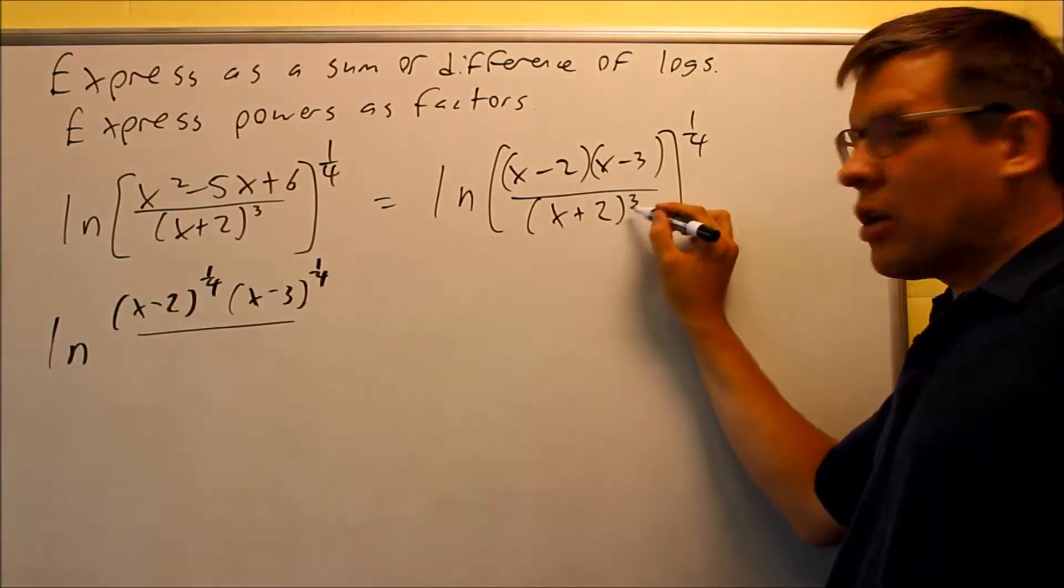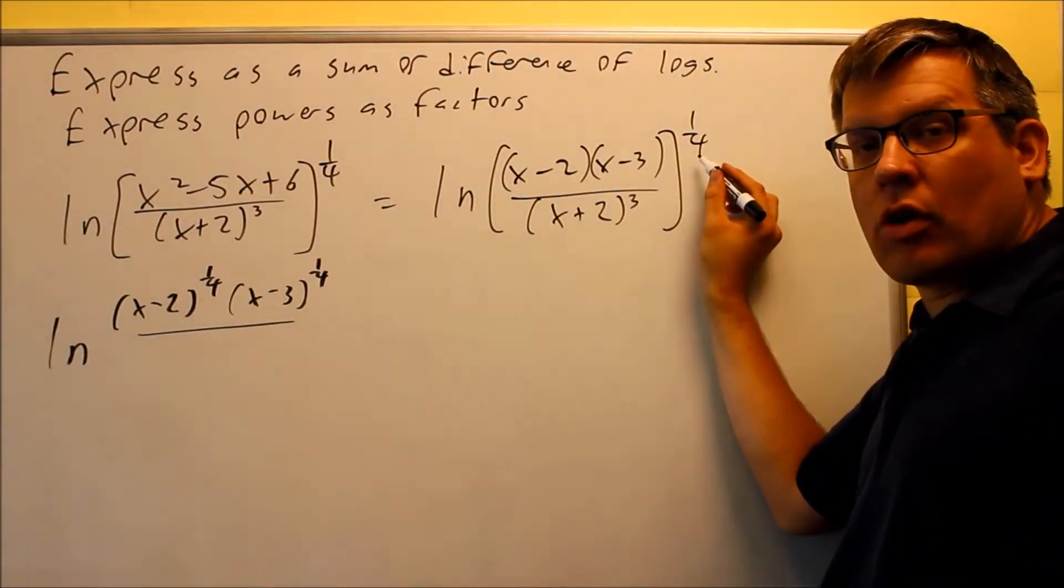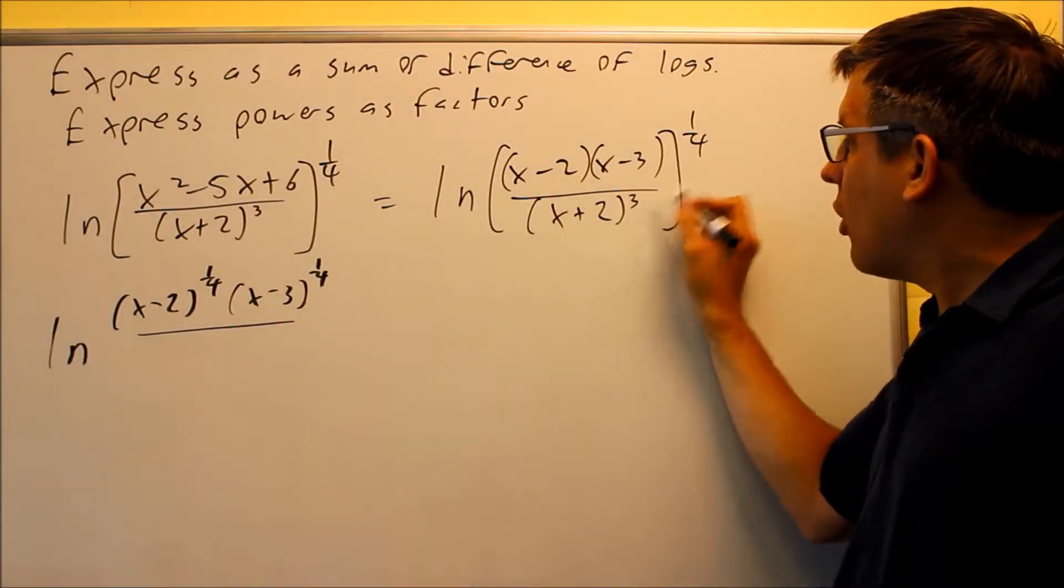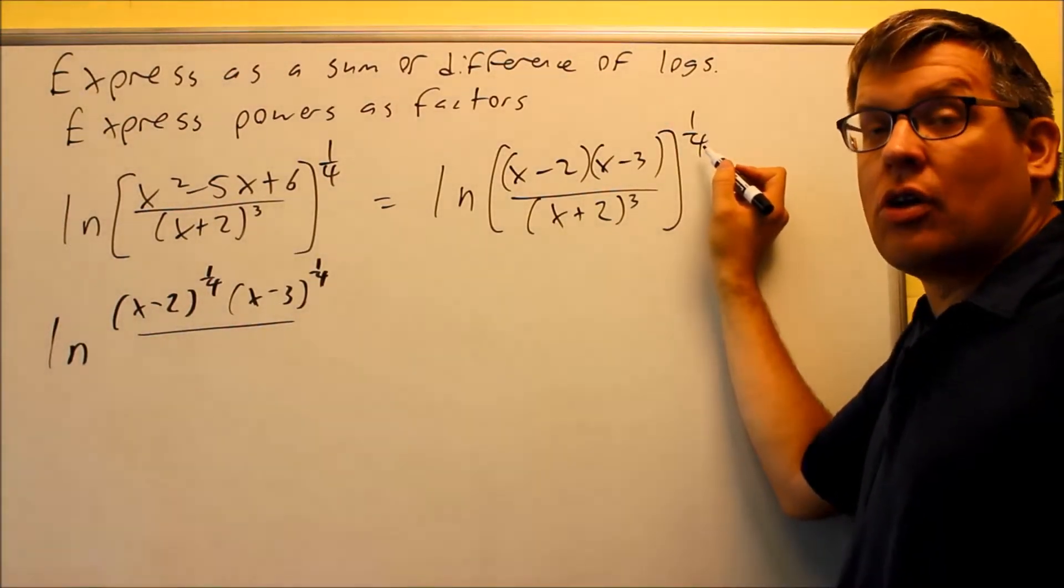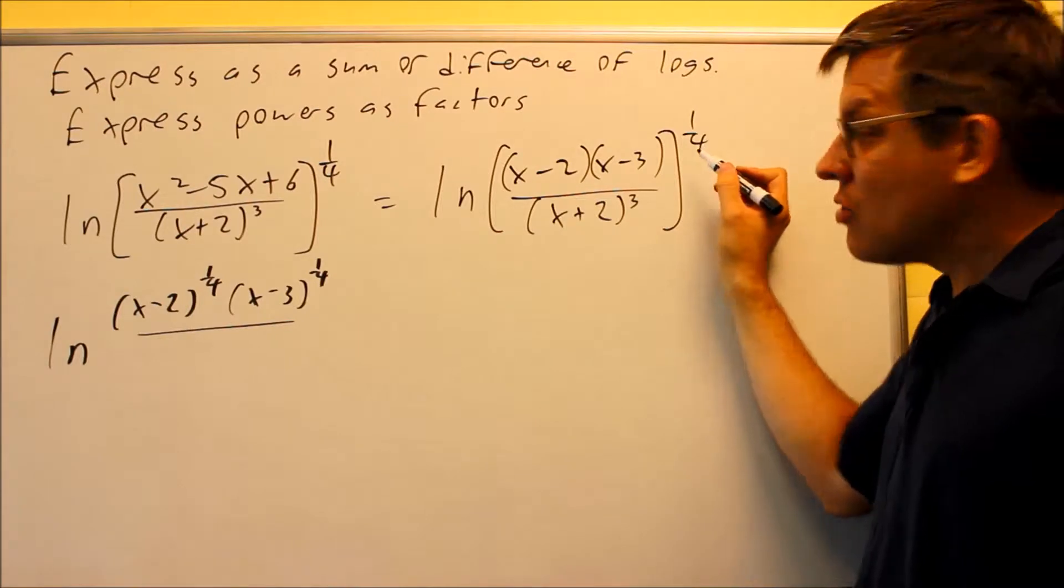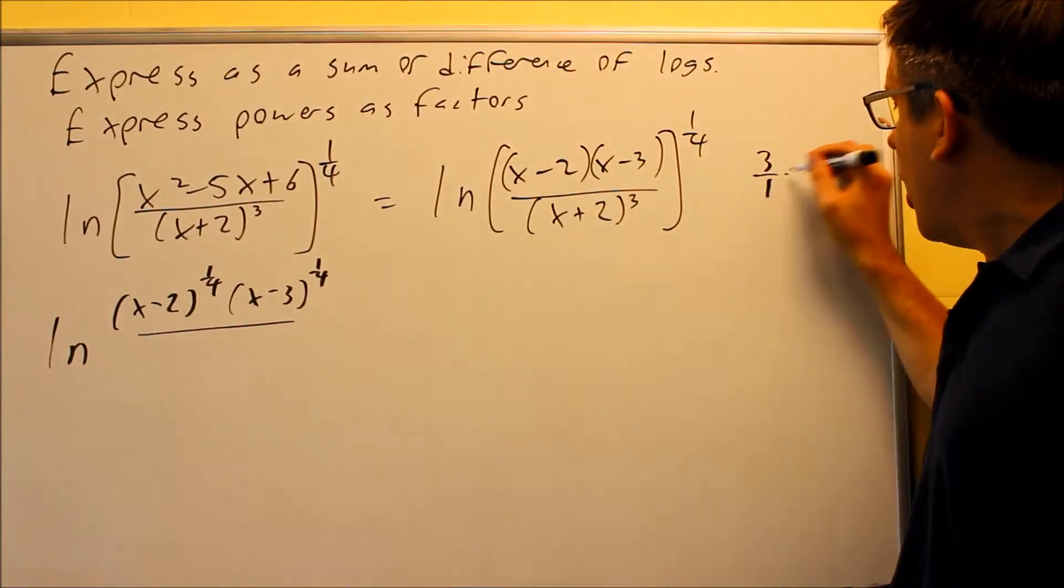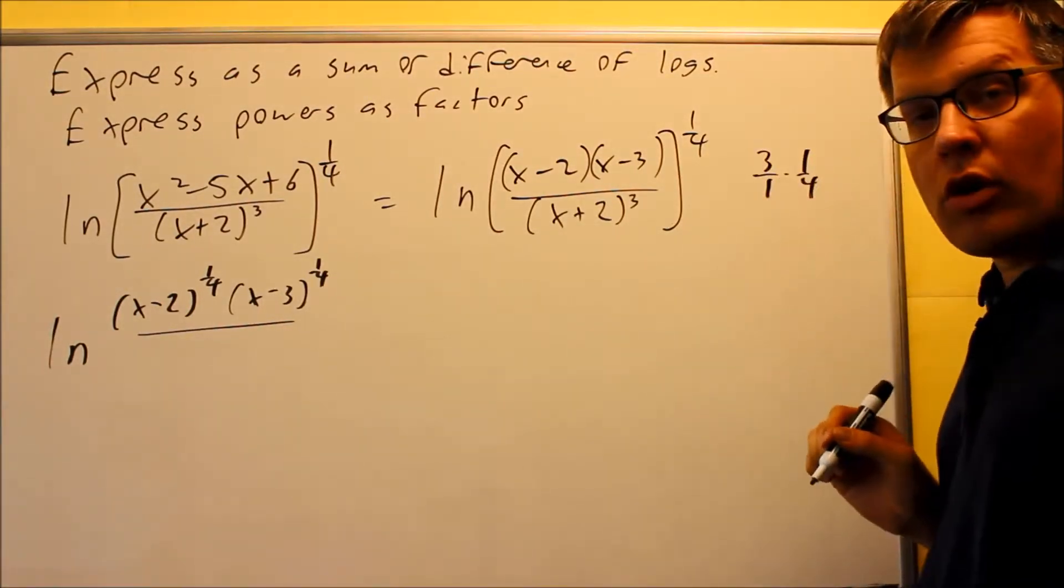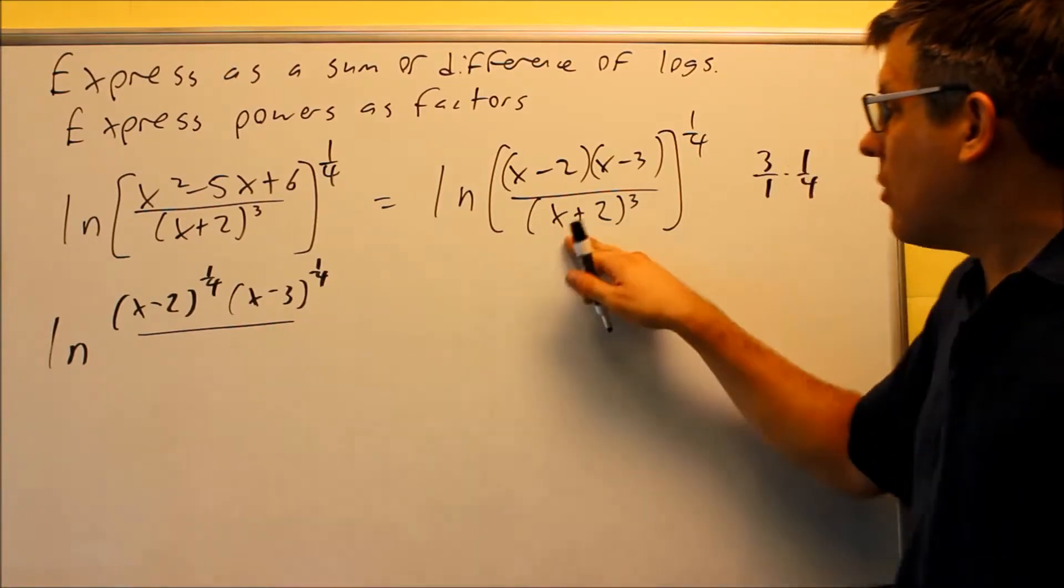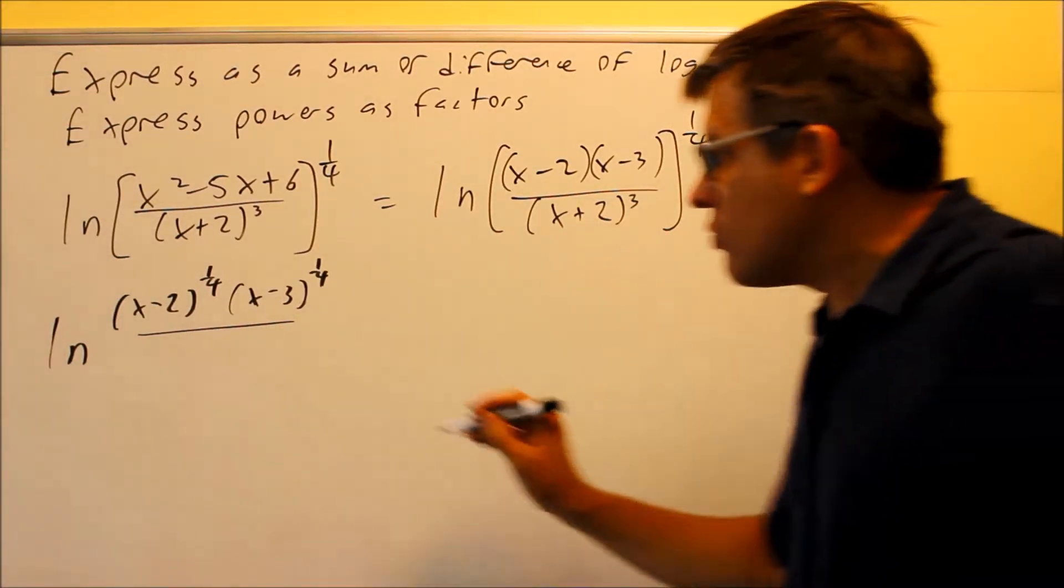I have a cube, and I'm raising that to one-fourth power. So one of our exponent rules says that when you have a power raised to another power, you have to multiply the exponents. So I've got to take three over one and multiply it by one-fourth. That's going to give me three-fourths. So on the bottom, I'm going to have x plus two to the three-fourths power.